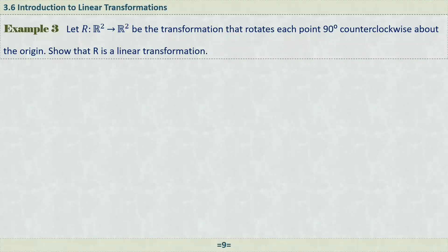Let's continue. Here we have another example related to linear transformation. Let R be a transformation that maps R2 onto R2 and rotates each point 90 degrees counterclockwise about the origin. Show that R is a linear transformation.